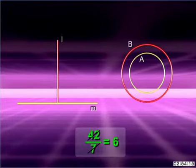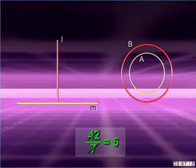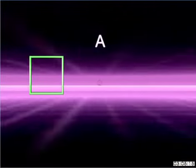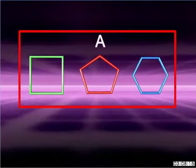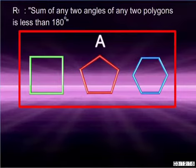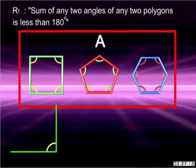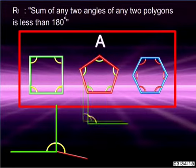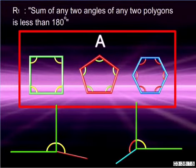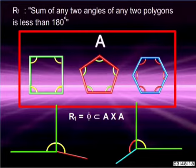In set theory a relation describes a possible connection between the elements of a set. Consider set A of regular polygons consisting of a square, a pentagon and a hexagon. Let R1 be the relation that stands for 'sum of any two angles of any two polygons is less than 180 degrees.' Since the sum of no two angles of any two polygons is less than 180 degrees, no element of this set is related to any other. Thus R1 is an empty relation in set A, and R is equal to the empty set phi, which is a subset of A cross A.